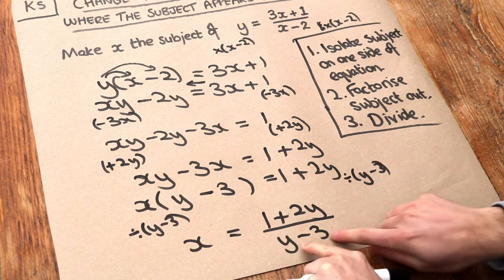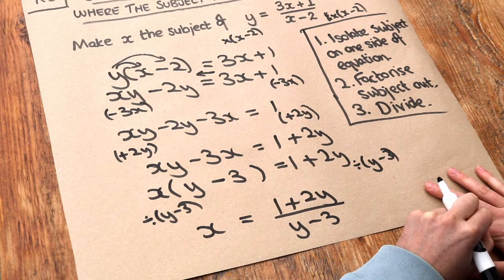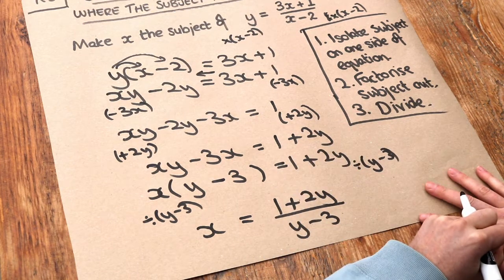We don't need those brackets, by the way, because there's nothing else around the denominator. And that's the final answer, because x is indeed on its own on one side of the equation. So therefore, x is the subject.